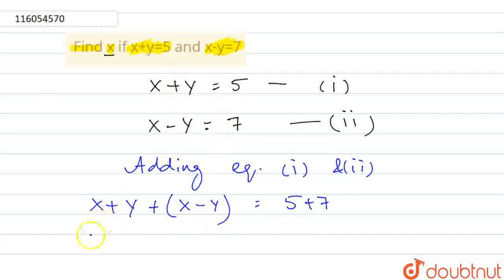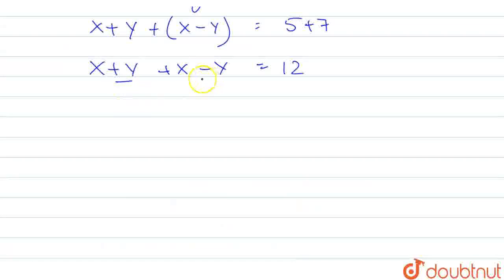So we get x plus y plus x minus y is equal to 5 plus 7 equals 12. This y is positive, this y is negative. So y, y will cancel out.